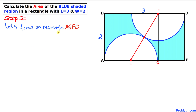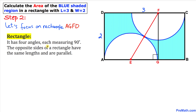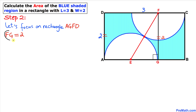Let's focus on rectangle AGFD. By the definition of a rectangle, opposite sides have the same length. Since side AD is 2 units, FG must also equal 2. Furthermore, since both radii equal r, the total length EF equals r + r = 2r.